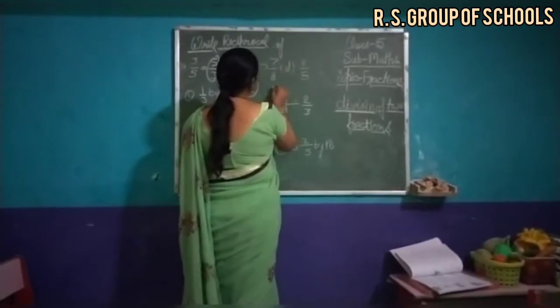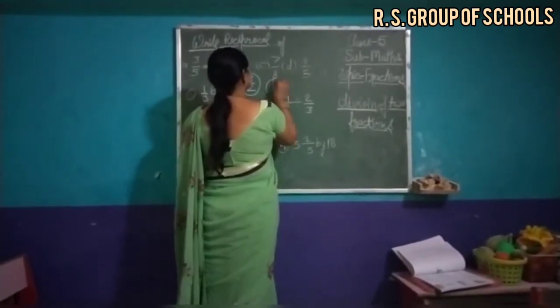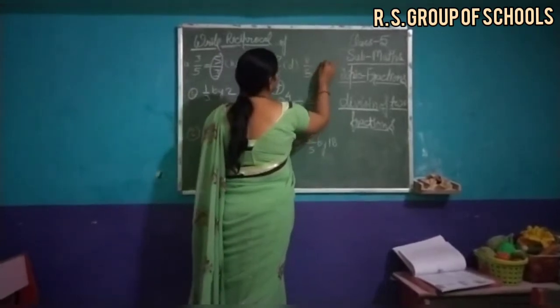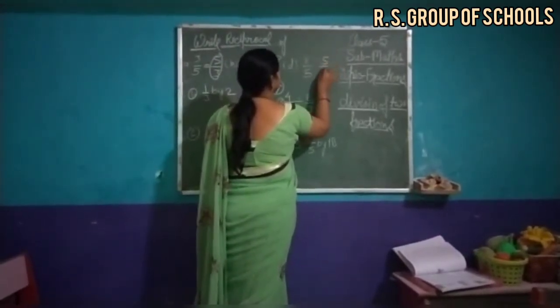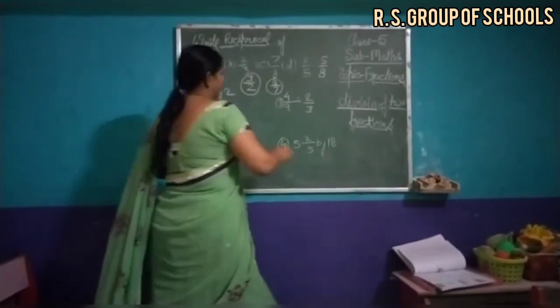7 upon 8, reciprocal is 8 upon 7. 8 upon 5, reciprocal is 5 upon 8. These are the reciprocals.